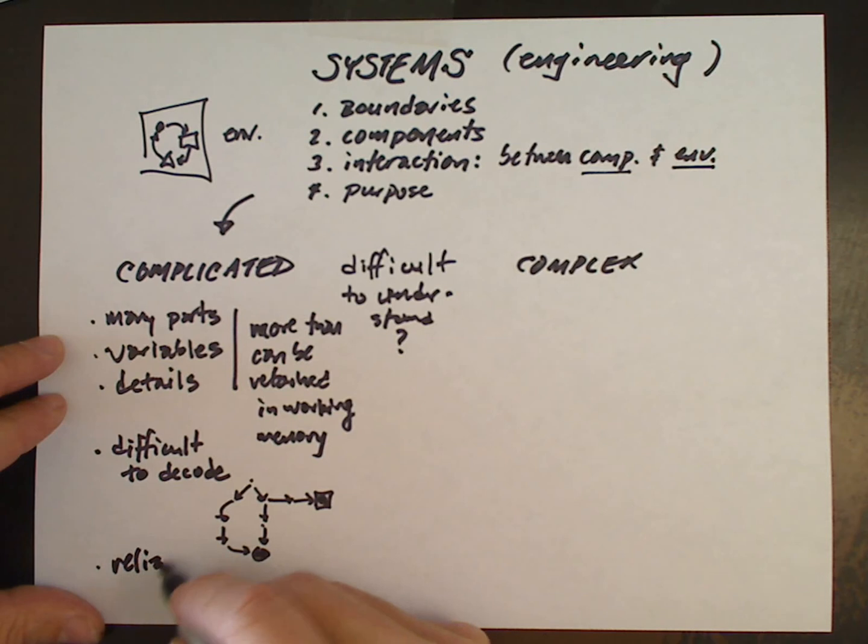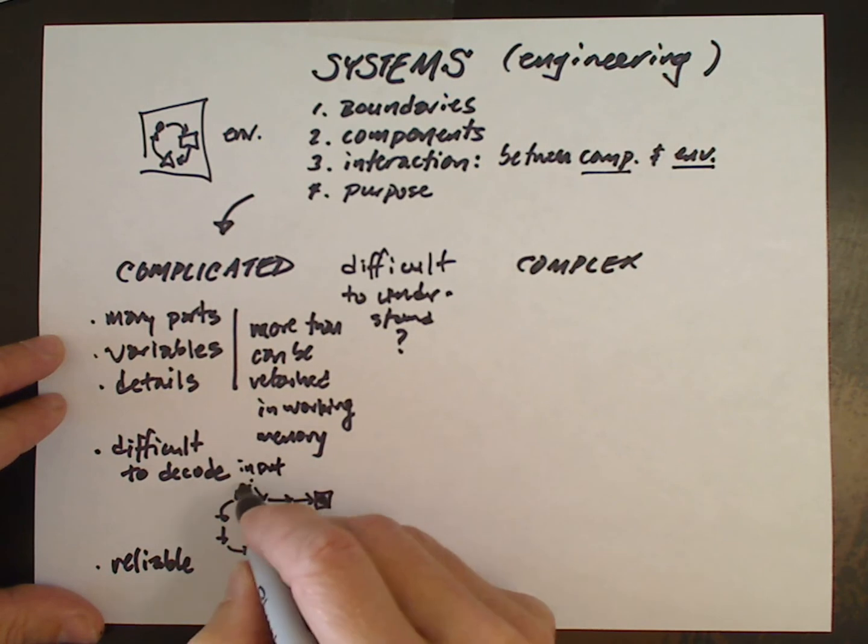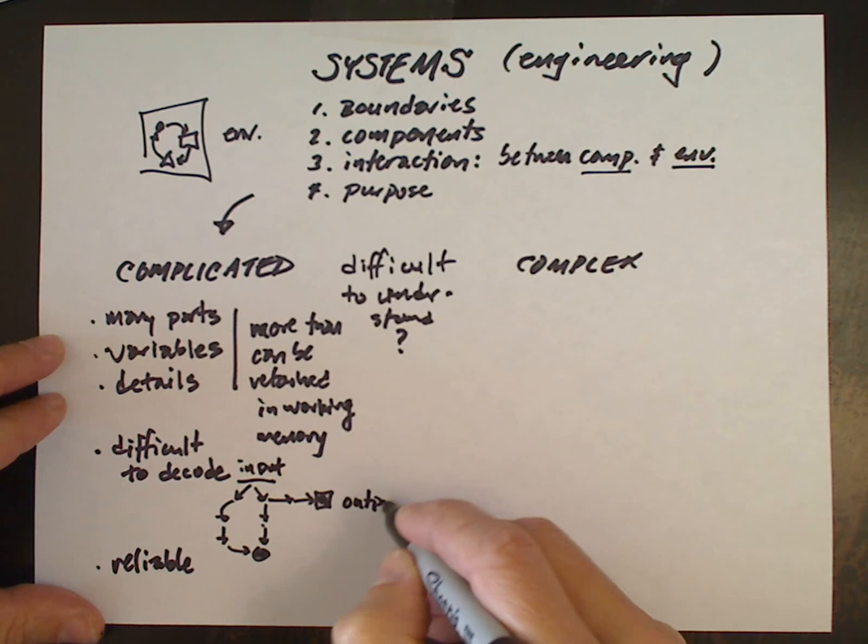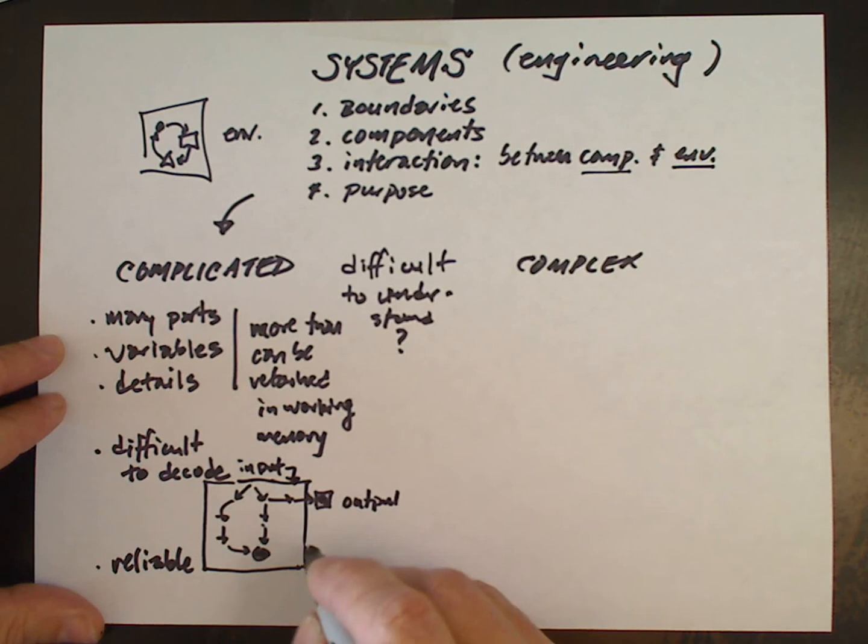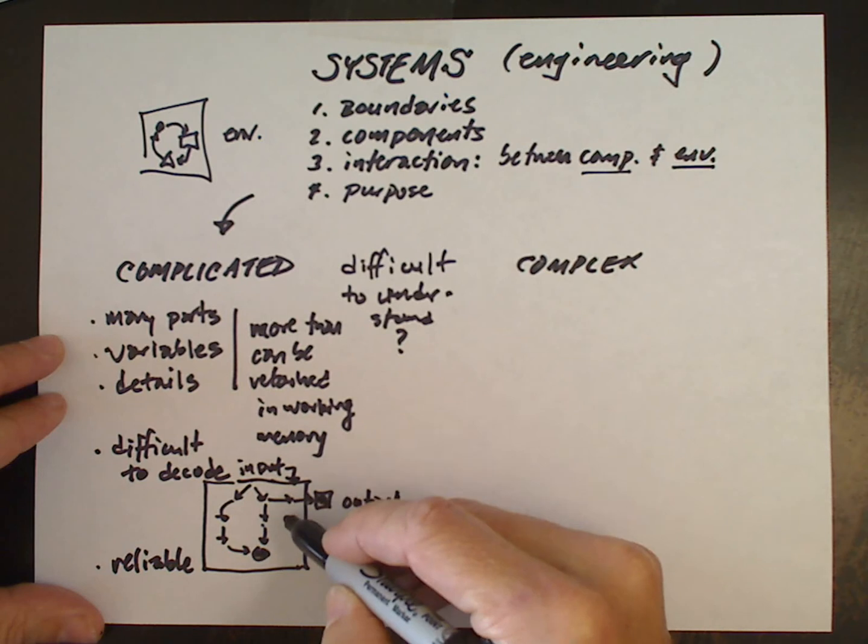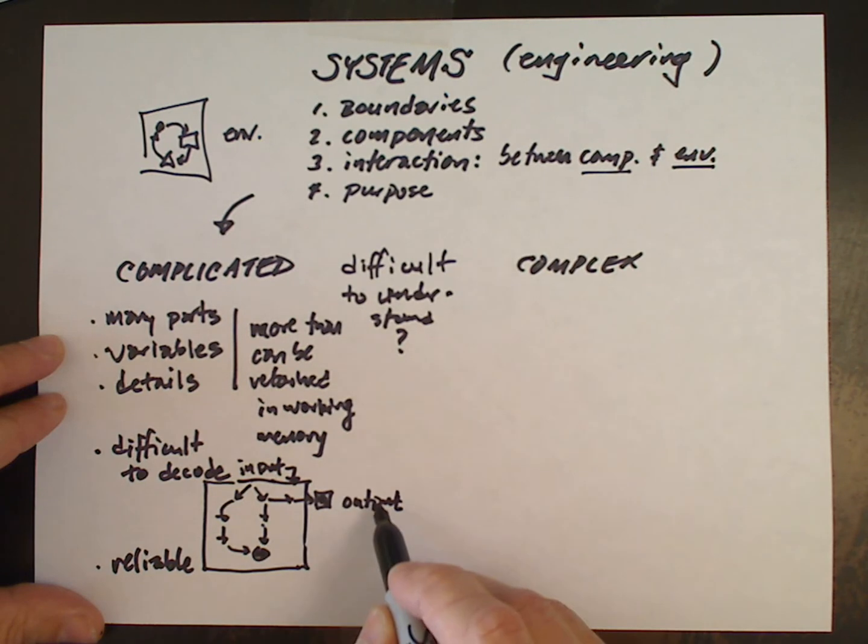But they're also reliable. In a complicated system, a machine, an automobile is a machine, for example, you get the same output if you add the same set of inputs. That is, within the boundary of the system, any interaction with the complicated system will result in a reliable prediction or a reliable outcome. The environment may turn the key in the ignition and the engine will start. Because the system, when it's in good working order, is reliable. Complicated systems behave as they have been designed to behave.